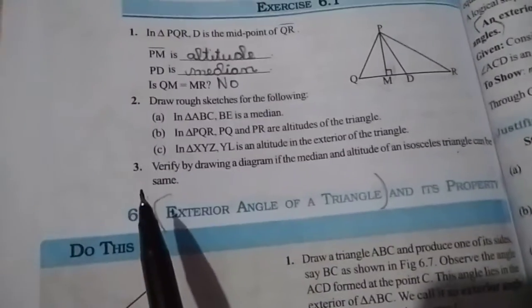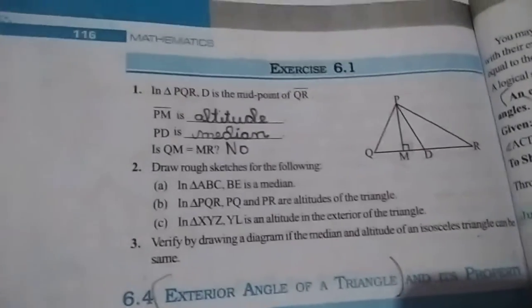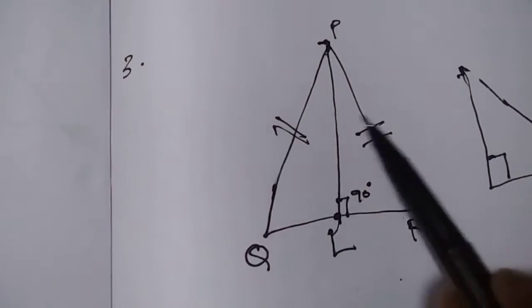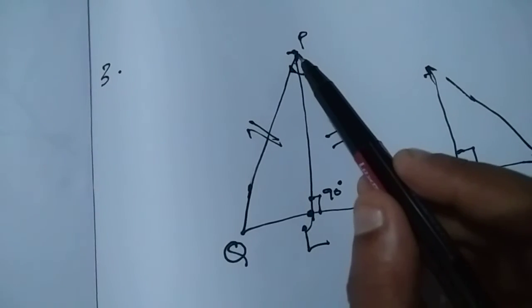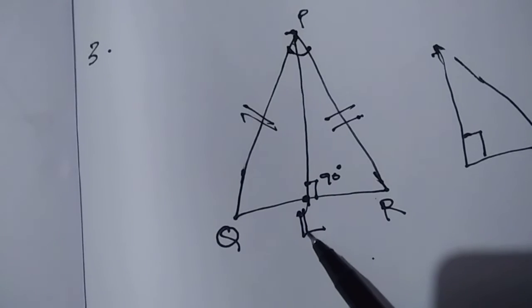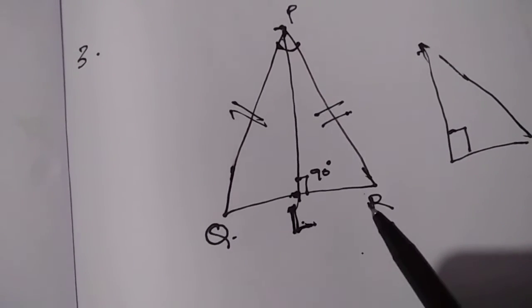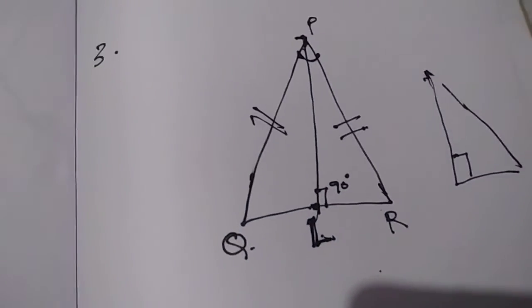For Exercise 6.1 question 3, verify by drawing a diagram if the median and altitude of an isosceles triangle can be the same. Draw an isosceles triangle PQR where the two opposite sides are equal. Take P as the vertex and draw a line segment to point L on QR. Since QL and LR are equal, L is the midpoint, making PL the median. PL is also perpendicular to QR, so PL is the altitude as well. Therefore, the median and altitude of an isosceles triangle can be the same.